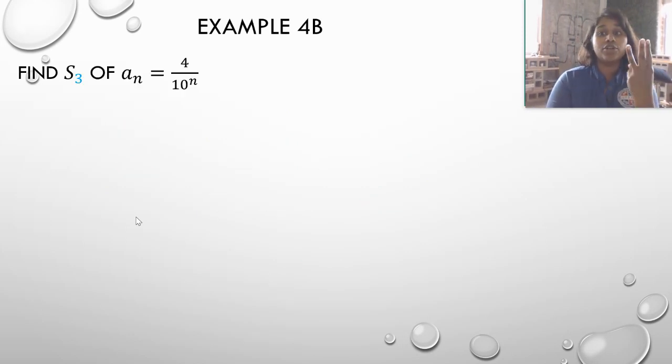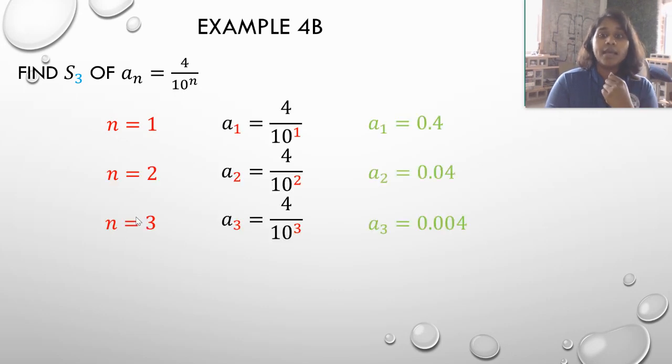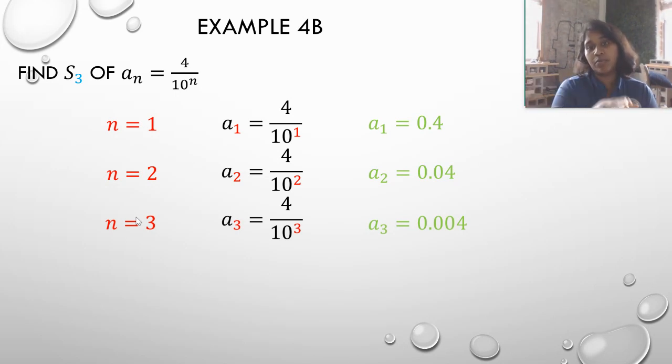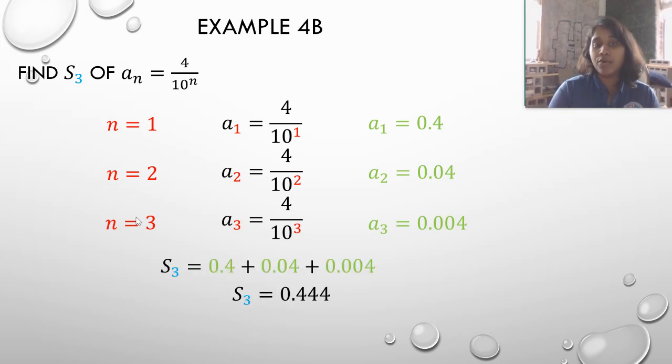So let's find the third partial sum, because that's what S sub 3 stands for, of a sub n equals 4 over 10 to the n. Again, we're given a nice neat explicit formula. So we're going to find the first three terms. Plug in 1, plug in 2, and plug in 3. Oh, anything interesting that we noticed there? Look at that pattern: 0.4, 0.04, 0.004. So what do you think is going to happen when we add them all up? We end up with 0.444. So this is a beautiful example of how sequences and series show us all of the patterns that exist inside mathematics. And this is just that proof of what happens when we divide by 10.